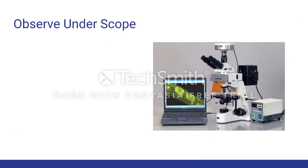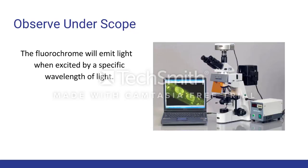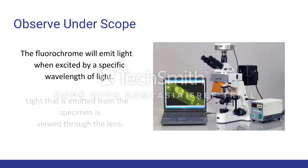After completing all of those steps, you are then ready to view the specimen under an epifluorescent microscope. The fluorochrome attached to the antibodies will emit light when excited by a specific wavelength of light. The light that is emitted from the specimen is viewed through the lens. With optical detection, you can then determine where the specific protein is localized.